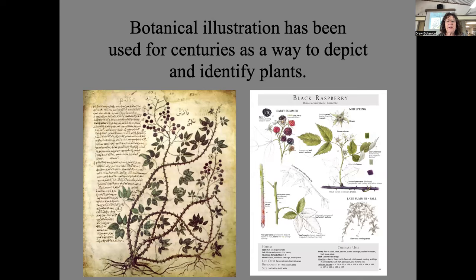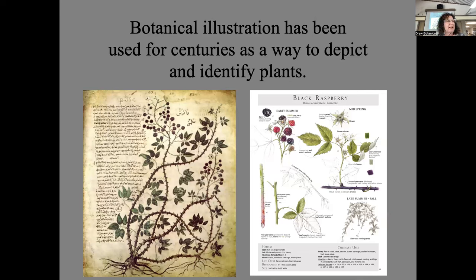Here I'm showing illustrations from very long ago. On the left is a plant in the raspberry or rubus family — one of the earliest botanicals, an herbal used to illustrate plants for medicinal and edible purposes so people could find them. On the right is an illustration I did for a foraging book — same idea, showing the parts of the plant so you can find and identify it.